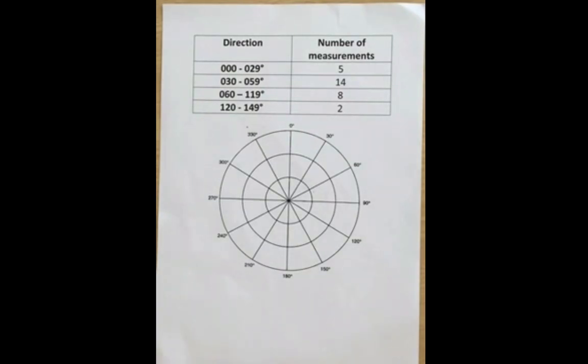Another way of thinking about this type of graph is as a circular bar chart with one of the axes being the points of the compass. Let me show you how it works.